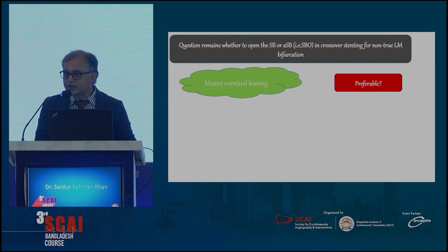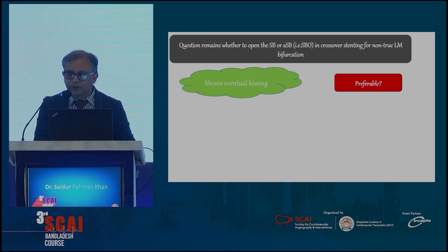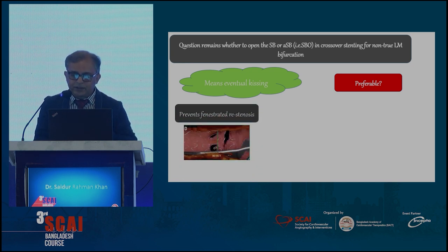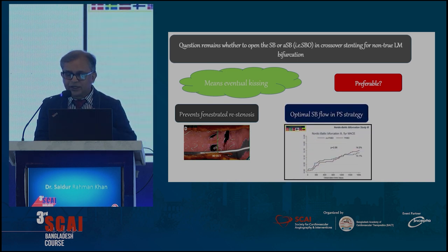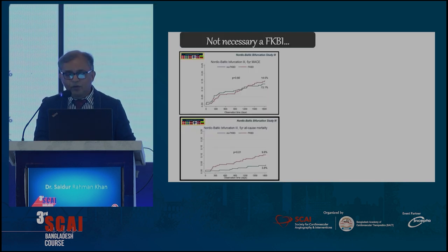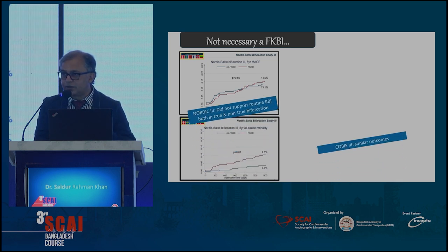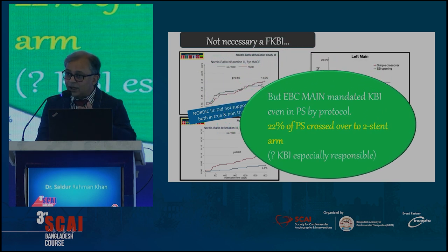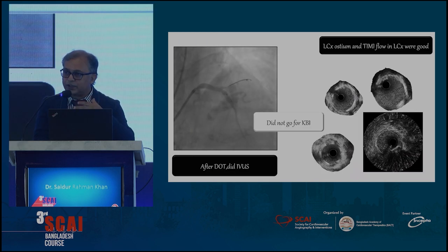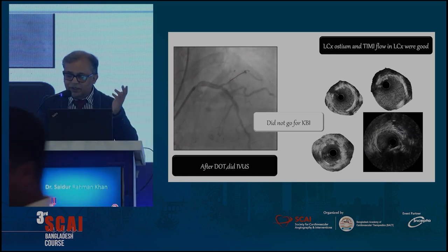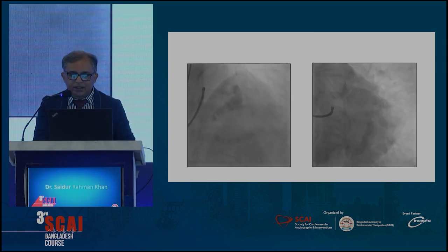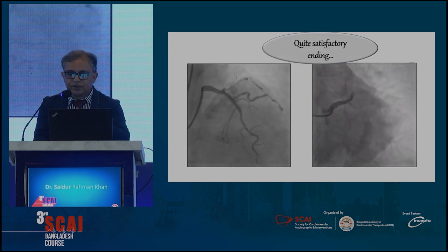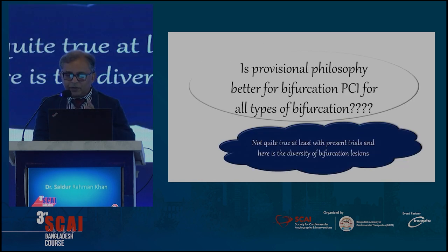The big question here is whether to go for a final KBI or not in provisional philosophy. You can prevent fenestrated stenosis and ensure more optimal flow — but Nordic 3 and COBIS 3 show no difference, or suggest KBI may not be necessary at all. However, EBC main has mandated KBI, which resulted in a 20% bailout stenting rate. This is the final picture for that case — a quite satisfactory outcome — but is provisional philosophy better for all types of bifurcation PCI? Not quite.